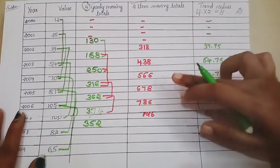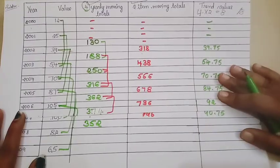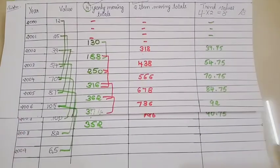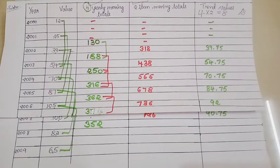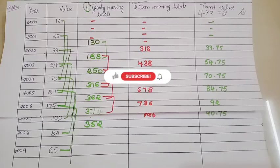This is how you calculate four yearly moving averages — that is all you need to do. If you have understood this thoroughly, take any other problem on four yearly moving averages and try to solve it yourself so that you will be able to solve it well in your examinations. That is it for today's video. Please do consider subscribing to my channel for more such videos. See you in the next video — till then, take care. Bye.